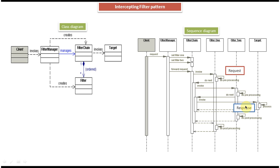Before the response reaches the client, filter two will do the post processing. Once it finishes, the filter chain invokes filter one to do the post processing. Once filter one finishes the post processing it invokes the filter chain, and then the response goes back to the client. This is the way the whole intercepting filter sequence works.